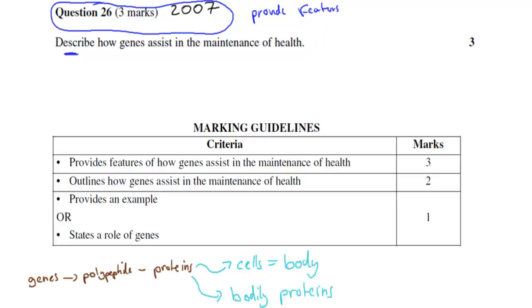To do that, the first thing you should be doing - I'll show you the guidelines - to get full marks, 3 out of 3, you should provide features of how genes assist in the maintenance of health. If you just said genes make proteins or genes are required for proteins and that's it, you probably get about 2 as opposed to 3.